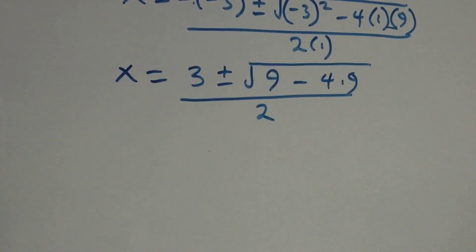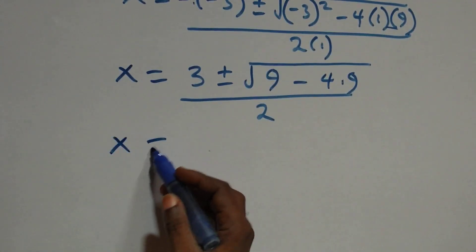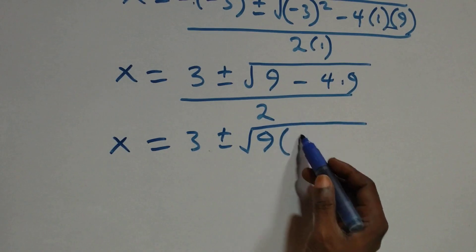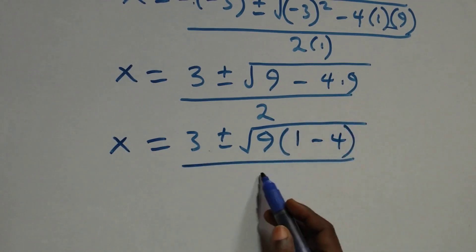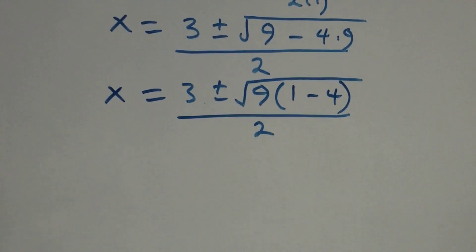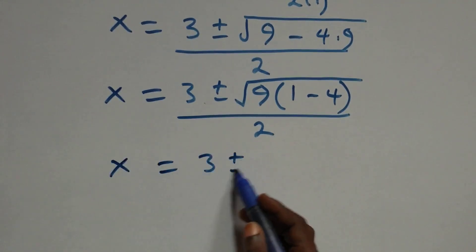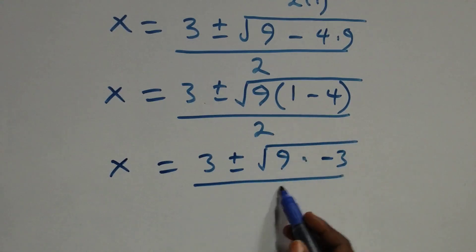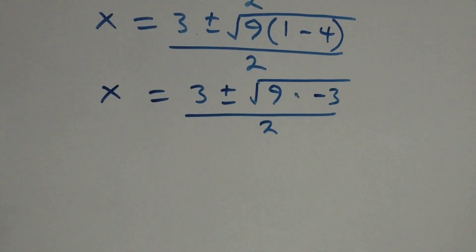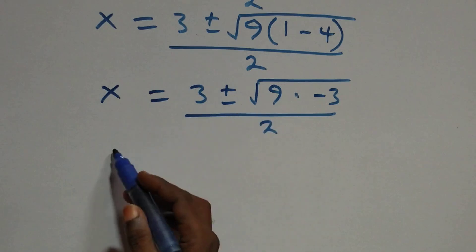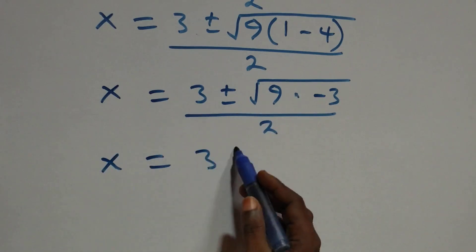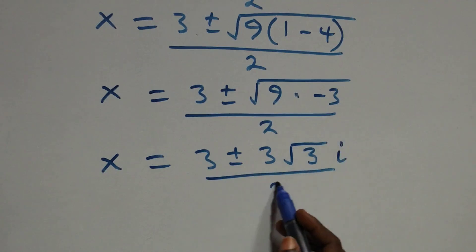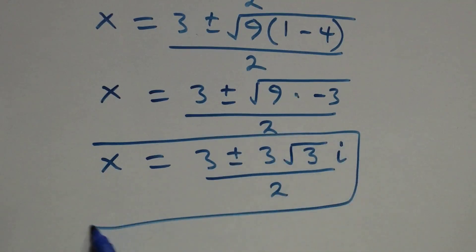Solving further: x equals to 3 plus or minus square root of 9 times (1 minus 4), which is 9 times minus 3, all over 2. Separating this, root of 9 gives 3, so we have x equals to 3 plus or minus 3 root of minus 3, same as root 3 times i, over 2. This implies two complex solutions from the first case.